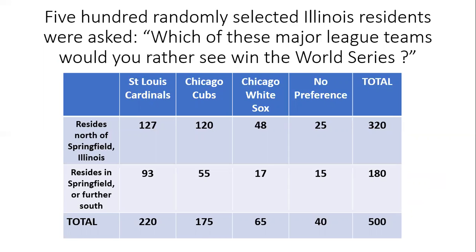For each individual in the survey we'll not only record their preferred team, but we'll also ask whether they reside north of Springfield, Illinois in the northern half of the state, or in Springfield or further south in the southern half. We see that out of the 500 surveyed, 320 happened to be from northern Illinois and 180 from southern Illinois.